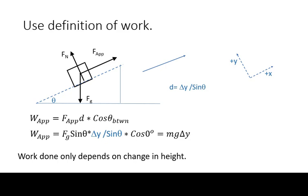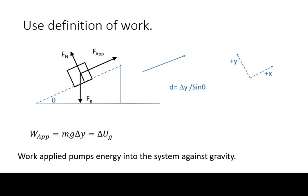Notice that the angle of the ramp cancels out and the applied force work once again just depends on height. Again, this equals the energy pumped into the system by the applied force and hence the gravitational potential energy.